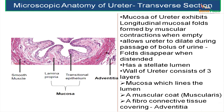When the ureter gets distended, these folds will disappear. As you can see from this picture, the lumen of the ureter is stellate, that is star-shaped. The wall of the ureter exhibits three layers.